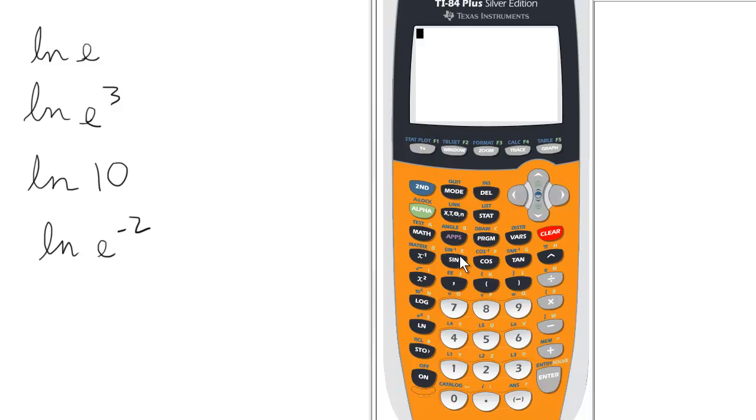When taking natural logs in the calculator, we press the ln key, which is the natural log. When we need e to any power, we use the regular e by pressing second and the division symbol for the e, and enter. So the ln of e is 1.